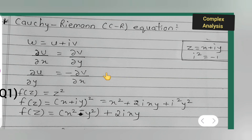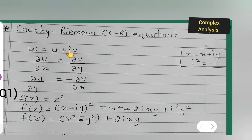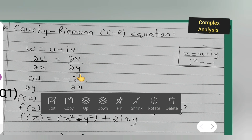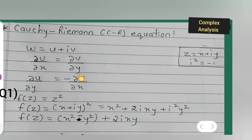Next, let me give you the Cauchy-Riemann equations. Given w = u + iv, differentiating with respect to x gives the first condition: ∂u/∂x = ∂v/∂y. The second condition is: ∂u/∂y = −∂v/∂x. These are the conditions to check whether a given function is analytic or not.